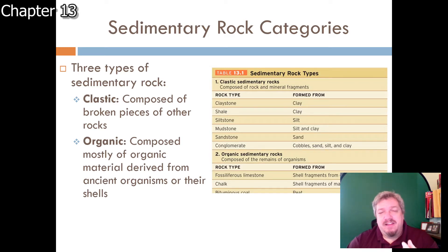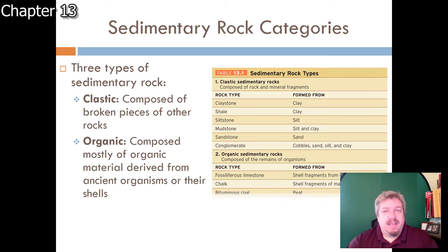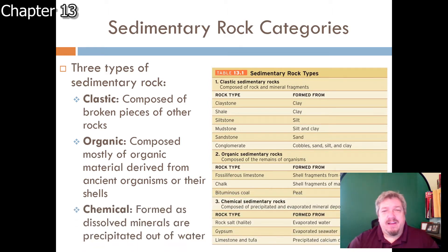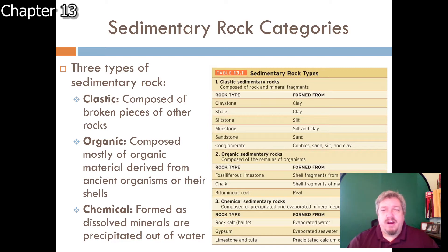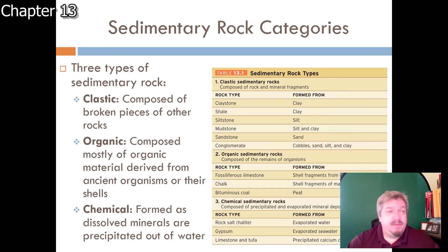Organic sedimentary rocks are a mixture - chalk is a mixture of shell fragments from ancient tiny animals, and coal is the remains of plants. The last category is chemical sedimentary rocks. For instance, if you had a glass of salt water and evaporated the water, what's left behind is salt - a layer that could turn into rock salt. Rock salt and gypsum are examples of this type.